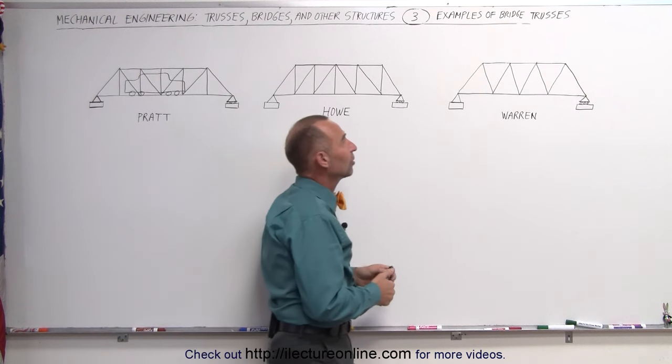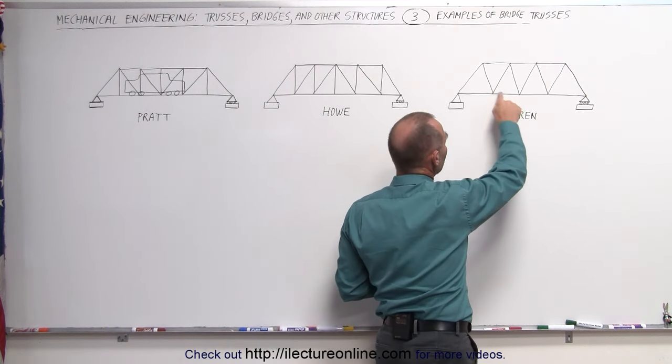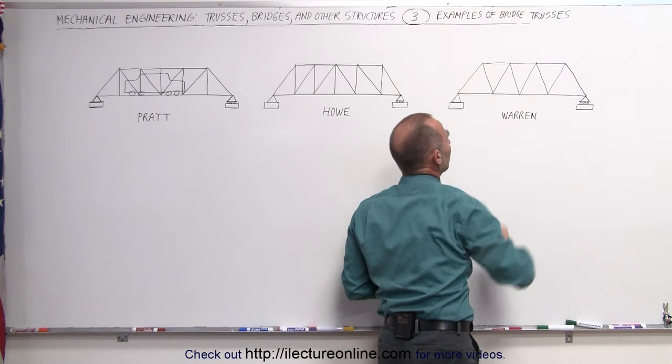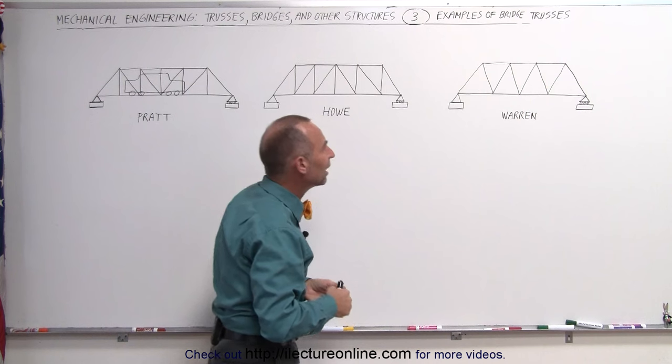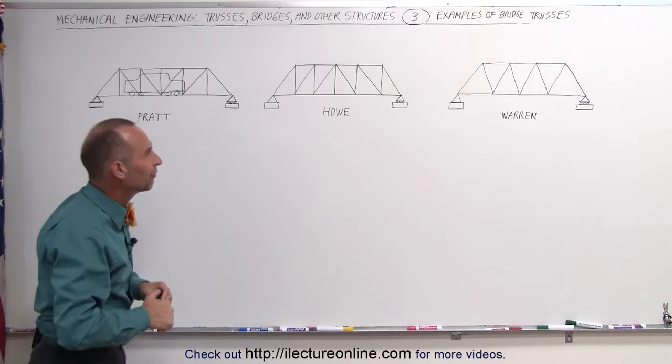The Warren is a little bit different. You can see here that it may not be quite apparent which of these beams are under compression or tension. But as we develop our techniques, you'll see that it will not be that hard to figure that out.